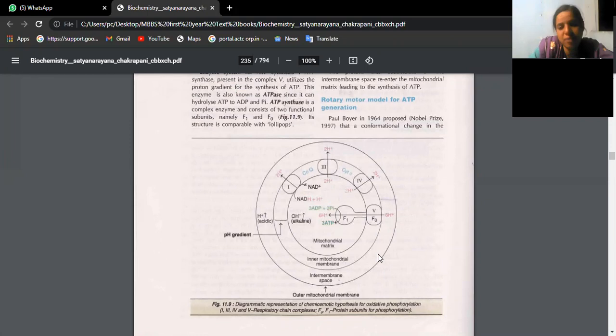This is the structure of mitochondria. So this is the outer membrane, this is the inner membrane. Just now, whatever we have studied, the electron transport chain, enzyme complex 1, 3, 4, and 5, you are finding. Now, at the enzyme complex 1, you will see NAD is converted to NAD. NADH plus H plus is converted to NAD.